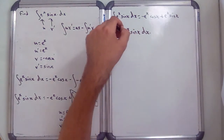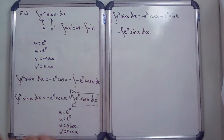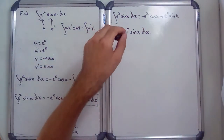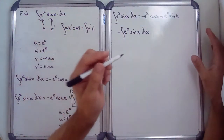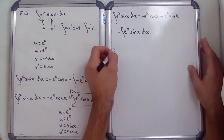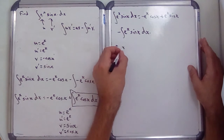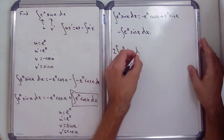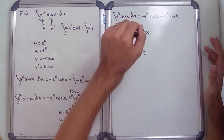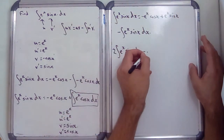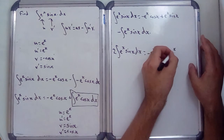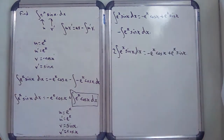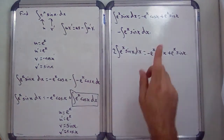Now, the integral of e^x sin(x) dx is what we're trying to find in the first place — but now it appears on the right-hand side as negative. There's a trick: we add the integral of e^x sin(x) dx to both sides, which gives us 2 times the integral of e^x sin(x) dx equals −e^x cos(x) plus e^x sin(x).